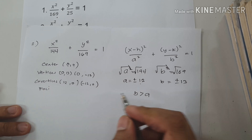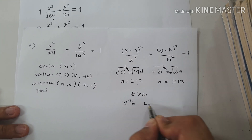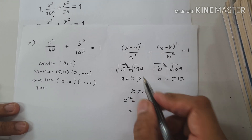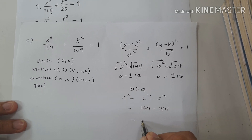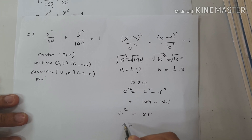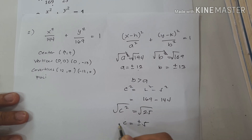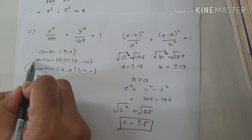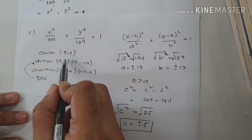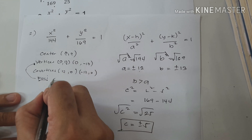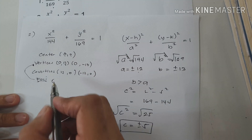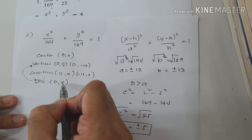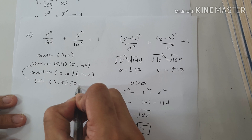Now let us find the foci. Using the formula c squared equals longer minus shorter squared: longer is 169 minus 144, that is 25. So c squared equals 25, meaning c is positive and negative 5. Always remember, foci are always aligned with the vertices. We add 5 to the value of k, so the foci are (0, 5) and (0, negative 5).